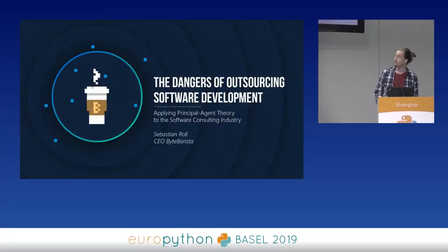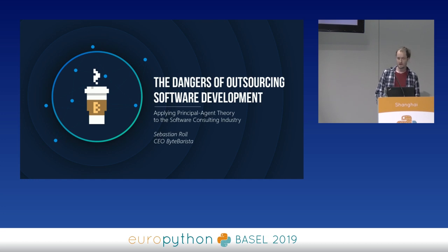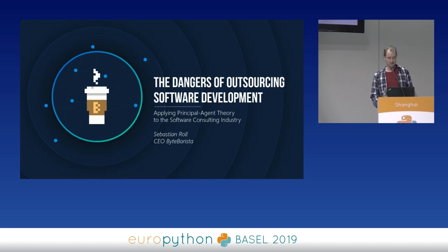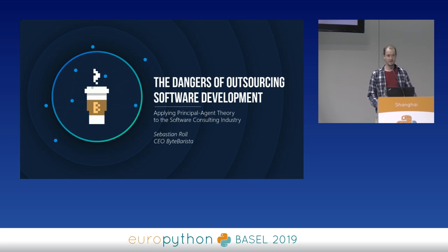Thank you all for coming. This is a spicy title — at least the first one looks very exciting. My name is Sebastian Roll. I have a small company that does consulting gigs; I do hardware design and I like to play around with MicroPython. Until recently I was also a senior consultant at a medium to large consulting company in Norway. The agenda for today is to explain the principal-agent theory problem, look at it in the context of software consulting, have a look at some sneaky things that a consulting company might do, and look at mitigation strategies.